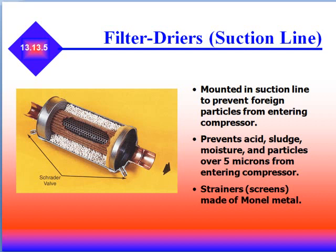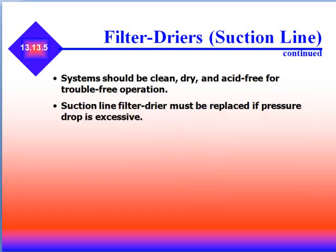Suction line filter dryers are mounted in the suction line to prevent foreign particles from entering the compressor. They prevent acid, sludge, moisture, and particles over 5 microns from entering the compressor. Strainers are made of mono metal. Systems should be clean, dry, and acid-free for trouble-free operation. Suction line filter dryers must be replaced if the pressure drop is excessive.